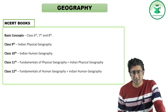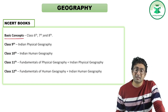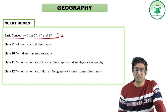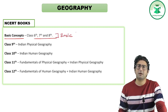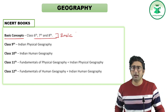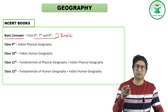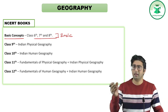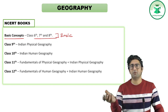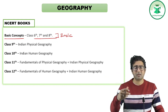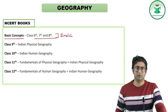So we will start reading NCRTs from the 6th class. The 6th, 7th, and 8th class NCRTs are considered basic NCRTs — they will build your basic foundational concepts: what is the solar system, how the earth was formed, air as a component, water as a component, the lithosphere as a component. These are the basics.